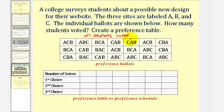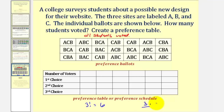From these ballots, we can create a preference table where we'll list the choices from first through third, then the number of voters in the first row that voted for each order. Since there are three choices, there are a total of three factorial, or six possible orders of preference. We can also use the counting principle: there are three options for the first choice, two options for the second choice, and one option for the third choice, giving us a total of six different orders.